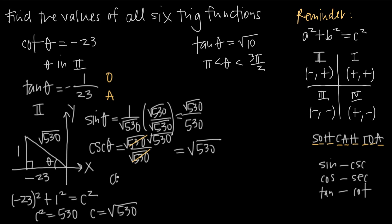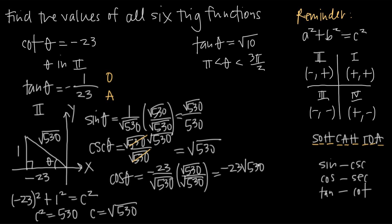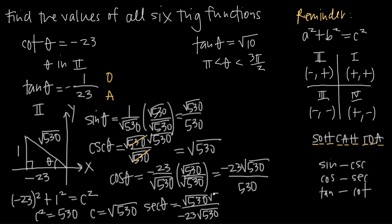For cosine of theta — adjacent over hypotenuse — the adjacent side is negative 23 and the hypotenuse is root 530. Rationalizing gives negative 23 root 530 over 530. Then secant, its reciprocal, works out to negative root 530 over 23 after canceling a factor of root 530 from numerator and denominator.